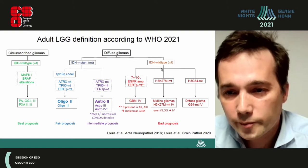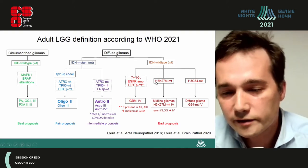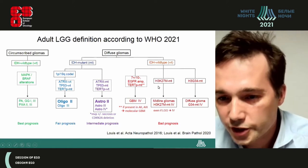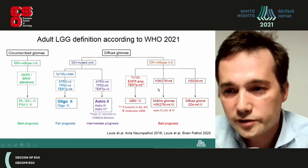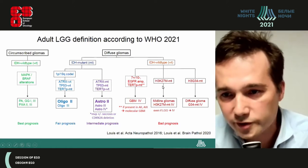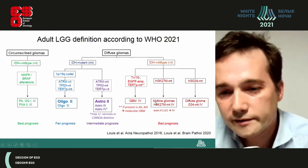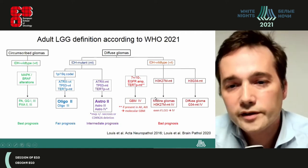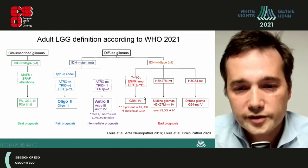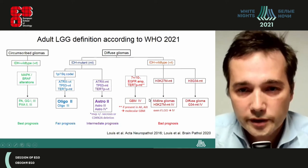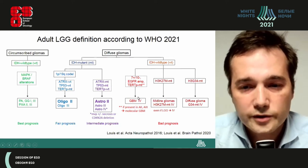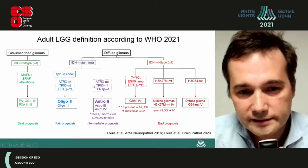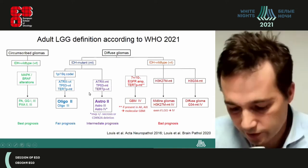Another example are midline diffuse gliomas with low-grade histology but with a histone mutation. Even if there is no histological evidence of aggressivity, the presence of this mutation makes these tumours classified as grade four. So this is very important as a first step — to be sure that when the histology is suggestive of low-grade diffuse glioma, that molecular analyses are consistent with the diagnosis.